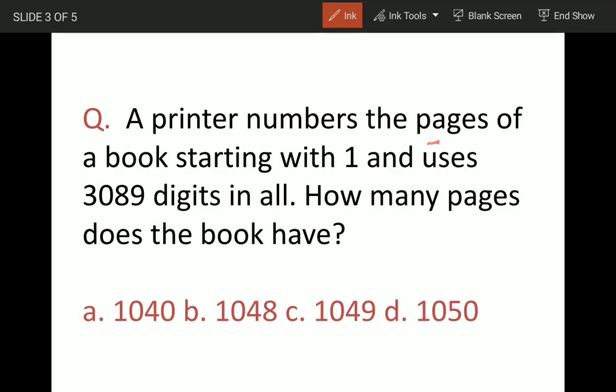A printer numbers the pages of a book starting with one and uses 3089 digits in all. So how many pages is the book having? So there's a book printer, this is a book, and he's using digits starting with one - page one, page two. In this manner he has used a total of 3089 digits.